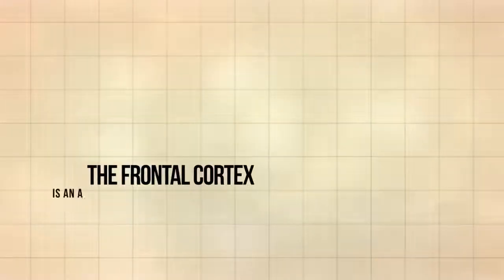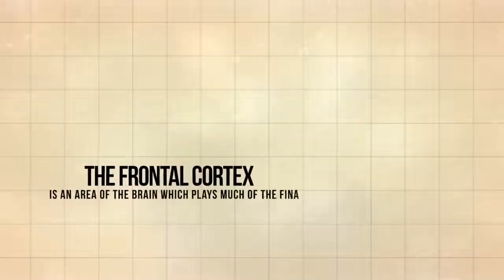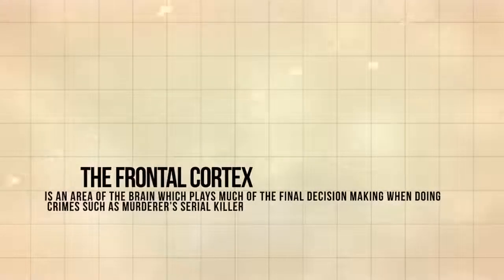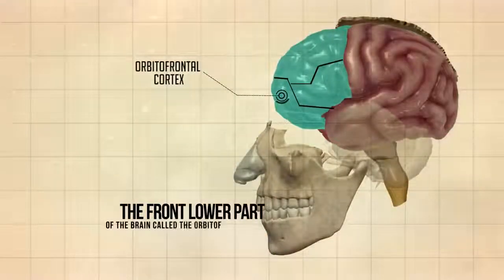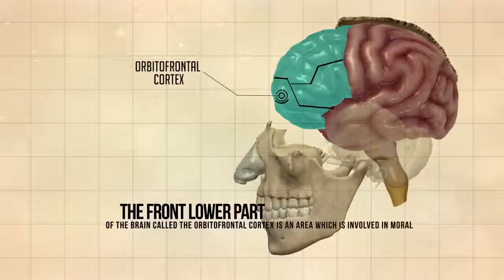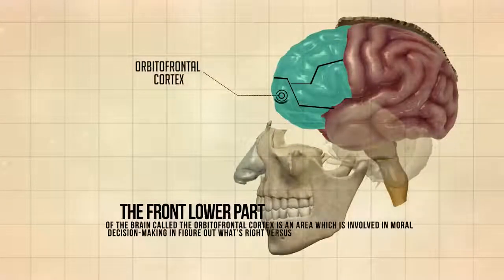The frontal cortex is an area of the brain which plays much of the final decision making when doing crimes such as murders, serial killers, rapists, robbers, etc. The front lower part of the brain called the orbital frontal cortex is an area which is involved in moral decision making, in figuring out what's right versus what's wrong.